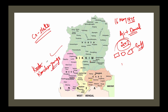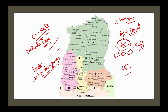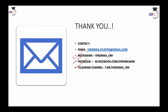The third largest peak in the world, Kanchenjunga, is also located in Sikkim — let us know its height in the comment box. The only road to China, Nathu La Pass, is also in Sikkim. Importantly, Sikkim was made a part of India after the 35th Constitutional Amendment and was made a co-state. That is all for today's lecture — for any queries, you can contact on Instagram, Facebook, or Telegram.